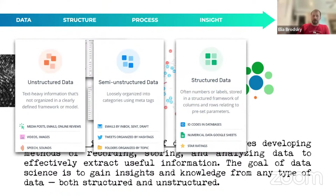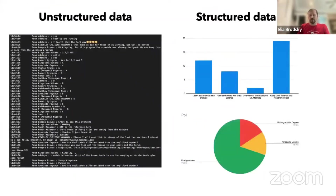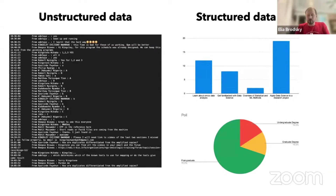In plain terms, what is the difference between structured and unstructured data? Well, if I take a survey and ask you what is your level of education, many of you will have different answers — somebody will say 'I'm a graduate student,' someone will say 'I am learning biology at university XYZ,' somebody will say 'I'm a professor.' So how do I analyze such a diverse set of answers?